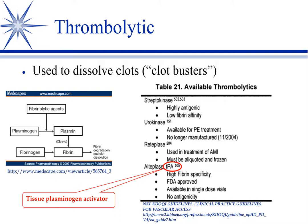Thrombolytics are different from anticoagulants. An anticoagulant prevents clot formation or progression, relying on the body's own endogenous thrombolytics to dissolve the clot. With thrombolytics, we're giving exogenous substances that activate the body's normal thrombolytic pathways — specifically agents that activate plasminogen into plasmin. Plasmin is our active clot buster — it degrades the fibrin in the clot and we actually dissolve it.